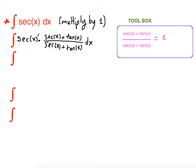And as the next step, you're going to distribute secant x on top, because this is secant x over 1. So what we're going to get is secant squared x plus secant x tangent x, all over secant x plus tangent x dx.